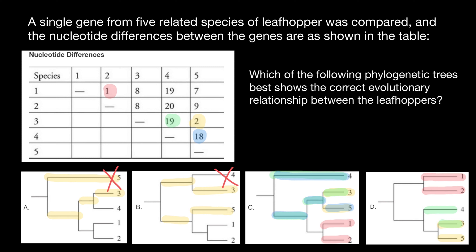The only correct answer is C. Some may wonder why the distances between species three and four and between five and four aren't exactly equal even though the phylogenetic distance should be the same. This is because it's an accumulation of genetic change — the molecular clock doesn't work like a wall clock. It's just an approximation, so numbers can slightly fluctuate, but we still expect a strong relationship between time and accumulation of mutations.